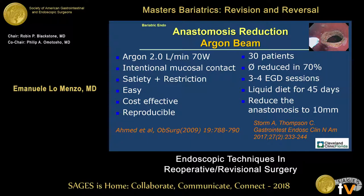What about using the argon beam to obtain the same goal of reducing the anastomosis? In this case, we intentionally touch the mucosa with the argon beam — something we tend not to do normally — but the idea is to induce scarring deep inside. It's cost-effective and reproducible, and in the small series of patients we have, it seems safe and well-tolerated. The goal is to reduce anastomoses that are approximately 10 millimeters.